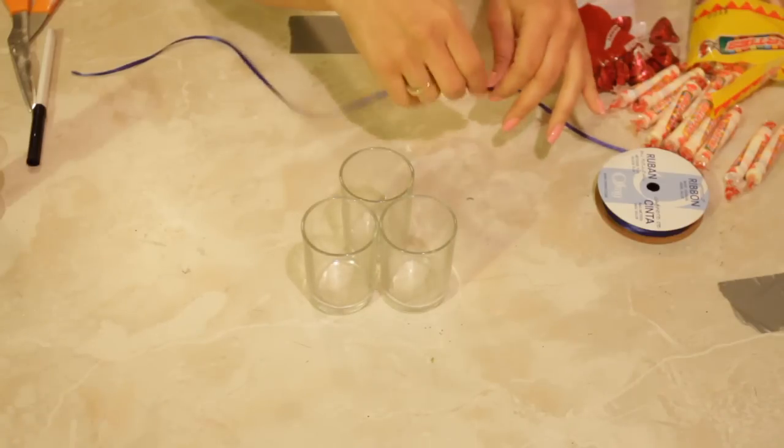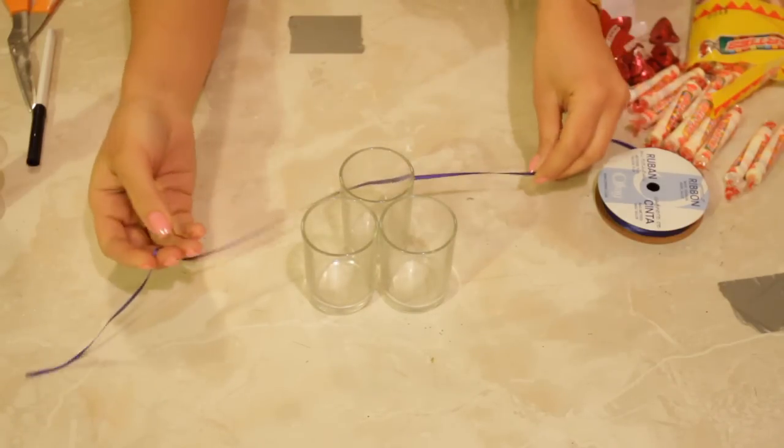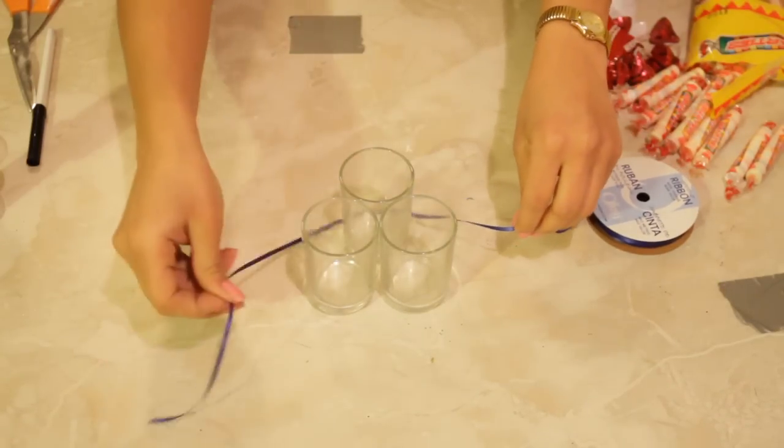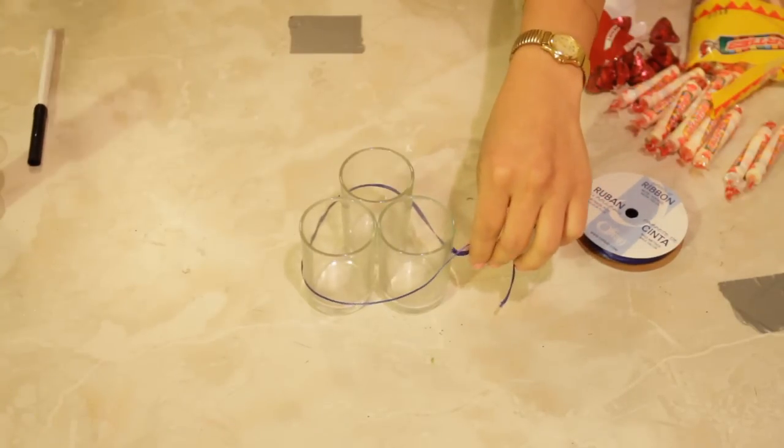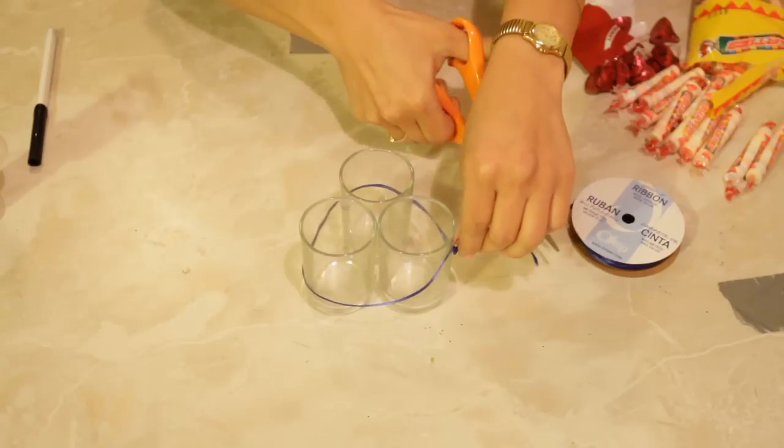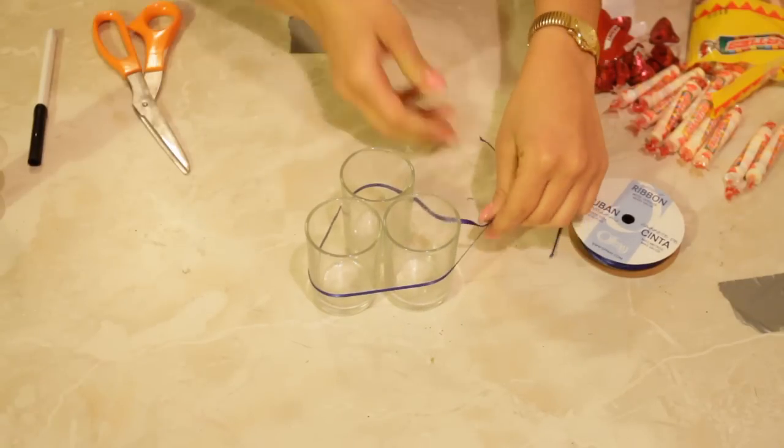So here I have three votive cups. I'm going to place them all together like so and wrap a blue ribbon around, or the color of your man's favorite choosing.